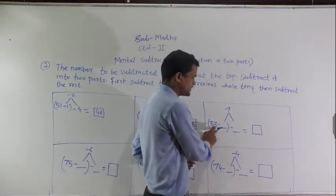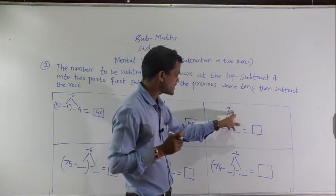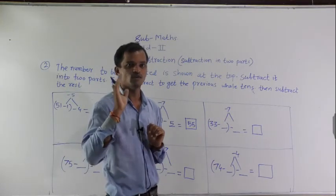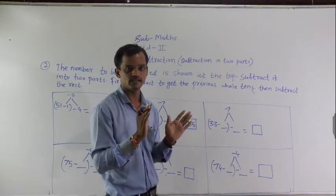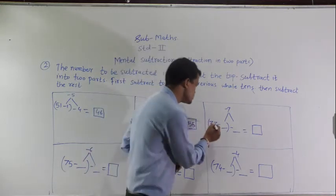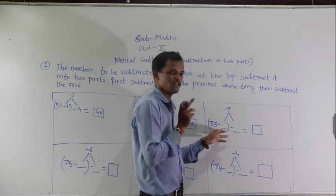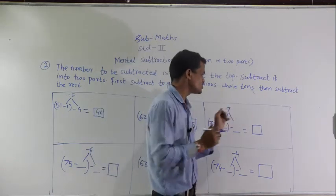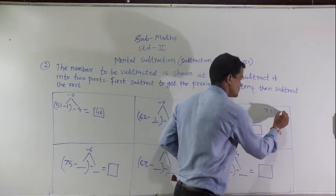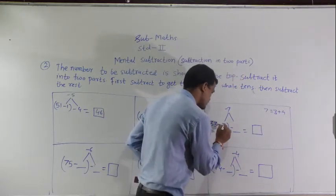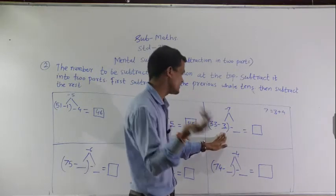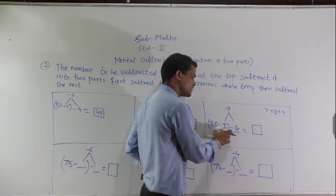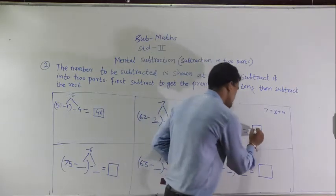Next: 33 minus 7. We have to subtract 7 from 33. Divide 7 into 2 parts. When you subtract the first part, you will get the whole ten. See the ones digit of 33, that is 3. First subtract 3 from 33. So 7 equals 3 plus 4. First subtract 3 from 33 to get 30, then subtract 4. 33 minus 3 equals 30, and 30 minus 4 equals 26.